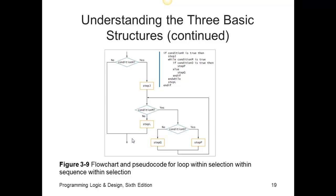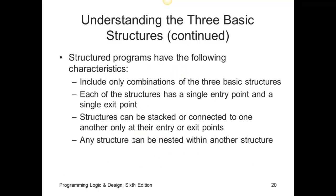Structured programs have the following characteristics. They include only combinations of the three basic structures: the sequence, the decision, and the loop. Each of the structures has a single entry and exit point. Structures can be stacked or connected to one another only at their entry or exit points. And remember, as I showed, the exit point of one is typically the entry point for the next structure. And any structure can be nested within another structure.